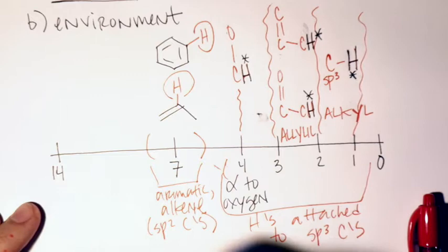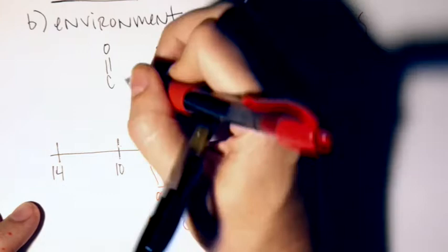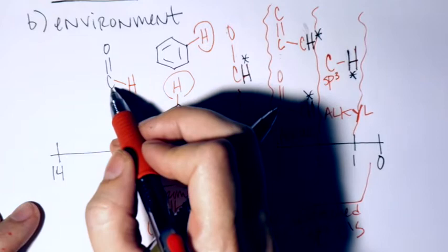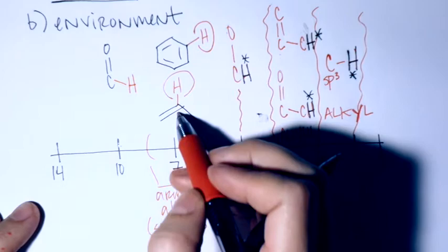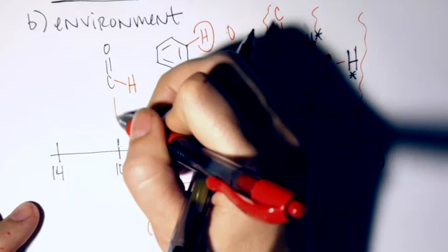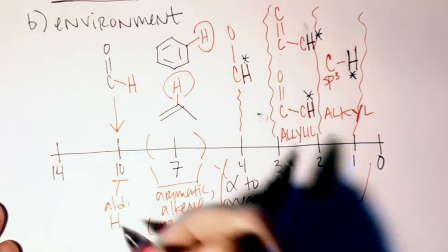Around ten is where we get aldehyde hydrogens — the H attached to the carbonyl carbon in the aldehyde functional group. Just like in carbon NMR, we'd expect this carbon to be more deshielded, so the H attached to it is also more deshielded. Those tend to show up almost always exactly around ten — kind of in the nine-to-ten region. That's specifically for aldehyde H's.